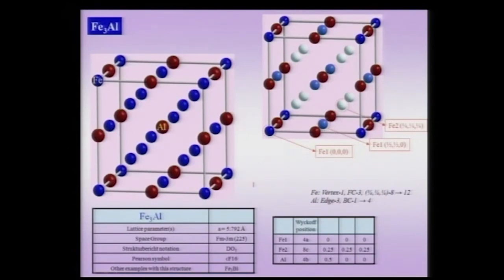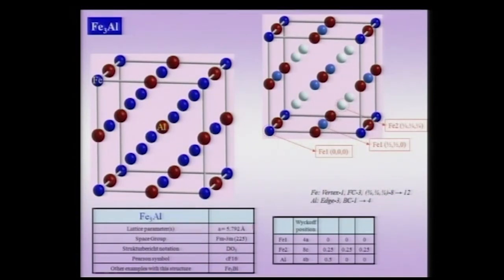In Fe3Al, as you can see, it is a large unit cell — not very large, but larger than some of the simple elements we have considered. It has a lattice parameter of about 5.8 angstroms and complete cubic symmetry, which is F4/m3̄2/m. There is a notation known as the Strukturbericht notation, which gives it the name DO3. In the Pearson symbol, it is cubic face-centered and there are 16 atoms in the unit cell.